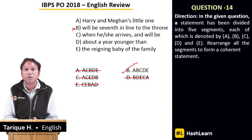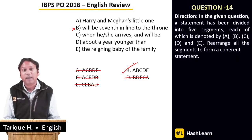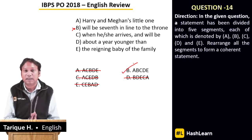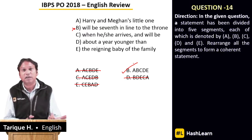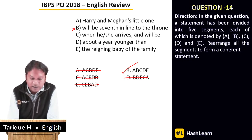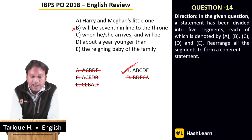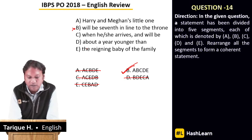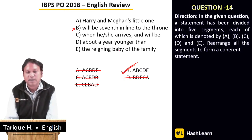If you can finish the 23 non-reading comprehension questions within 10–12 minutes, you can actually finish the reading comprehension too and complete all 30 questions in the paper. Getting 26–27 marks in the English paper would almost guarantee that if you clear the cutoff in the other two sections, you clear the overall cutoff of the examination. The answer here is B: 'Harry and Meghan's little one will be seventh in line to the throne when he or she arrives, and will be about a year younger than the reigning baby of the family.'